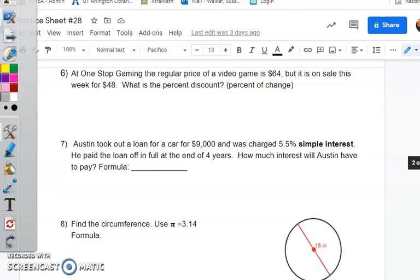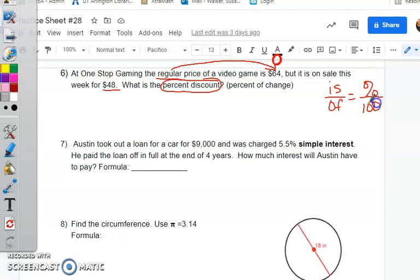Number 6. At one-stop gaming, the regular price of a video game is $64. But it is on sale this week for $48. So regular. Guys, remember O.T-W-O. But it is on sale for $48. What is the percent discount? Remember, percent discount means percent of change. I'm going to reiterate to you that, guys, you will see this one on STAR. Something similar to this you will see. So this, hopefully you know, is a percent problem. We do not have a percent, though. So that means we go to our secondary method, which is is over of equals percent over 100. So I'm going to change this up a little bit how I normally do it, but you're going to see. So I do know of is T-W-O, right? Total whole original. So I already know that. I'm going to erase this if it lets me. Total whole original is 64.